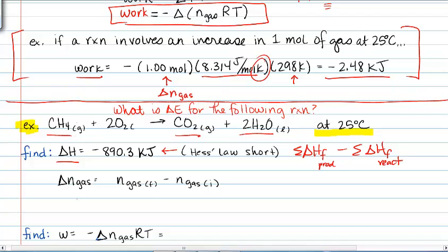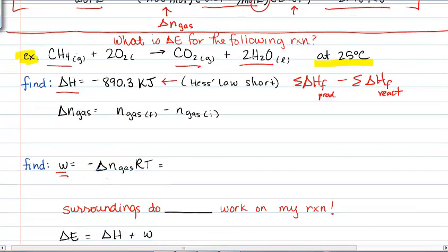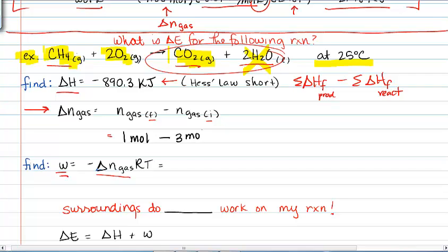Another thing we need to find is work. But in order to find work, we need to have the change in the number of moles of gas. So that's what this calculation is here. Number of moles of gas final minus number of moles of gas initial. So for this particular one, if we look at final up here, we ended up with 1 mole of carbon dioxide gas. Water is a liquid, so that doesn't count. So we have 1 mole of gas final minus what we started with initially. And initially, we have 1 mole of methane gas and 2 moles of oxygen gas. So minus 3 moles. So our change in the number of moles of gas is minus 2 moles.